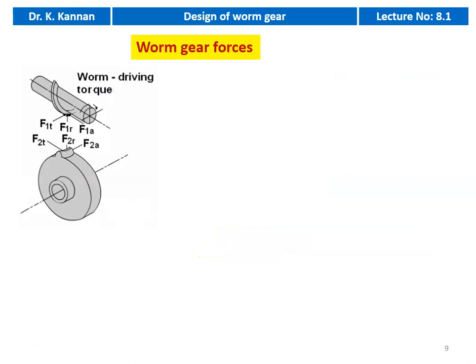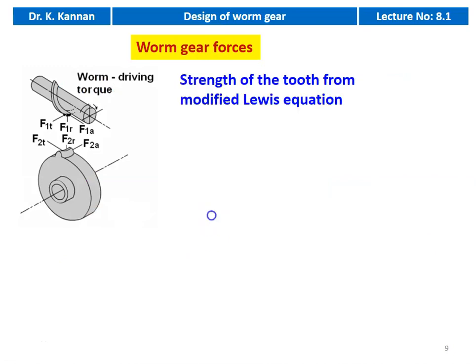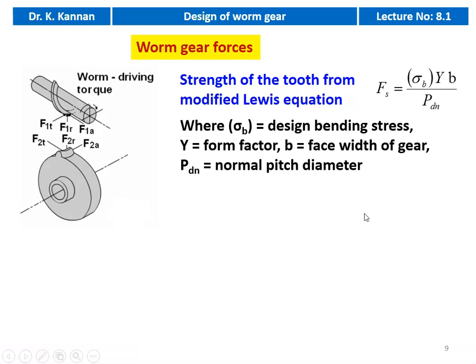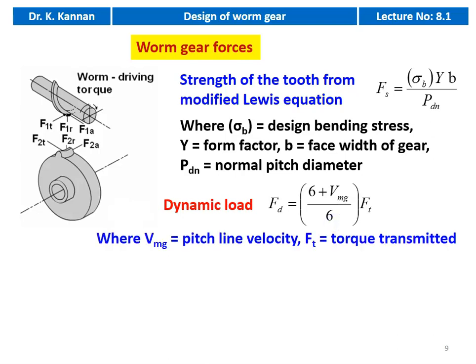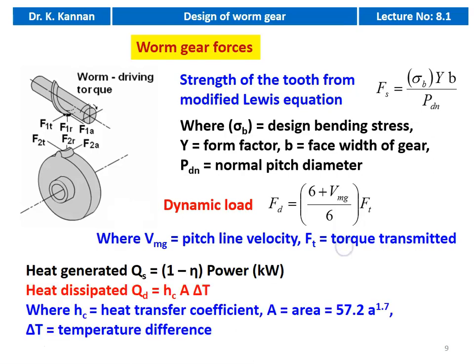There are different forces acting on the worm gear. First, we calculate the strength of the tooth from the modified Lewis equation: Fs = σb × y × b / Pdn, where σb is the design bending stress, y is the form factor, b is the face width of the gear, and Pdn is the normal pitch diameter. Dynamic load: Fd = (6 + Vmg) / 6 × Ft, where Vmg is the pitch line velocity and Ft is the tangential force to be transmitted by the drive. The amount of heat generated: Qs = (1 − η) × power of the drive in kilowatts.